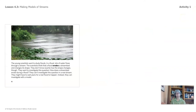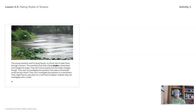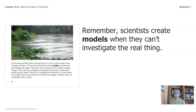The young scientists want to study floods. In a flood, lots of water flows through a stream. The scientists think that a flood erodes a stream bed and changes its shape, but they don't know exactly how the stream changes. They want to investigate this question: how does a stream bed erode during a flood? They can't investigate this question in a real stream — they might have to wait years for a real flood to happen. Instead, they can investigate with a model. Remember, scientists create models when they can't investigate the real thing.